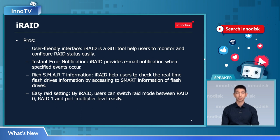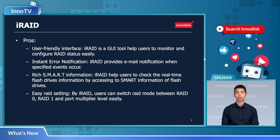Second, instant error notification. If something goes wrong with your disk array when you are not present, you will be alerted via email or other signals, so that you know there's something wrong with your RAID and should give it a look. Thirdly, rich SMART information — iRAID helps users get information on each individual disk so you can monitor the actual status of individual disks rather than the RAID as a whole. Lastly, it is easy to switch RAID settings — you can switch between RAID 0, RAID 1, or other port multiplier levels easily.